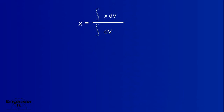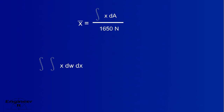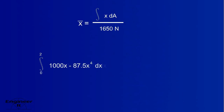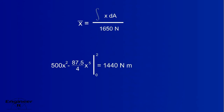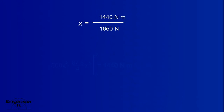This is a 2D problem, so the thickness will be a constant as well. The bottom integral solves for the area, but that was already solved for. Note the boundaries — we know what w is equal to. If we carry the units in the equation, we can see that the force units drop out.